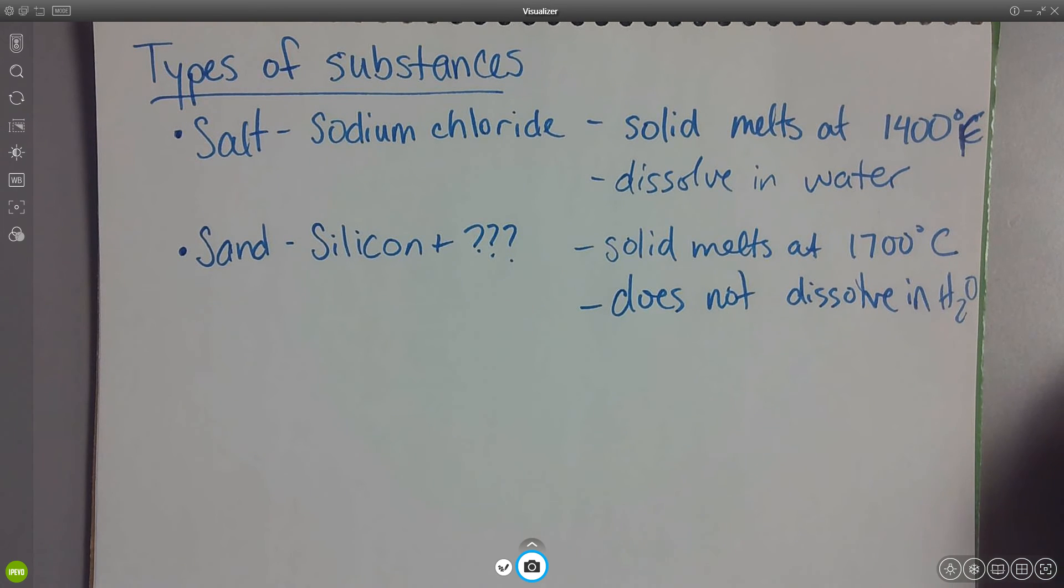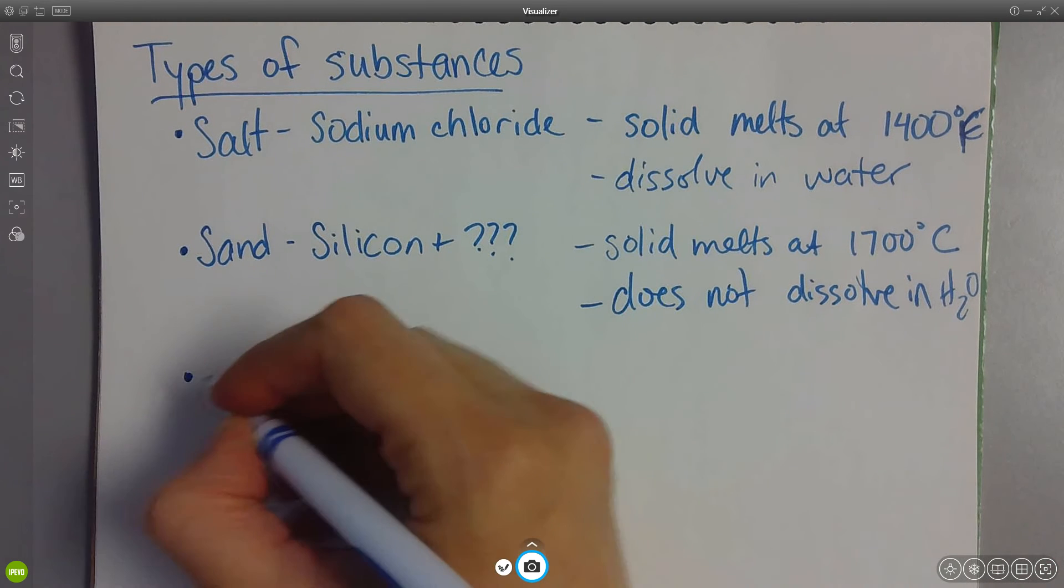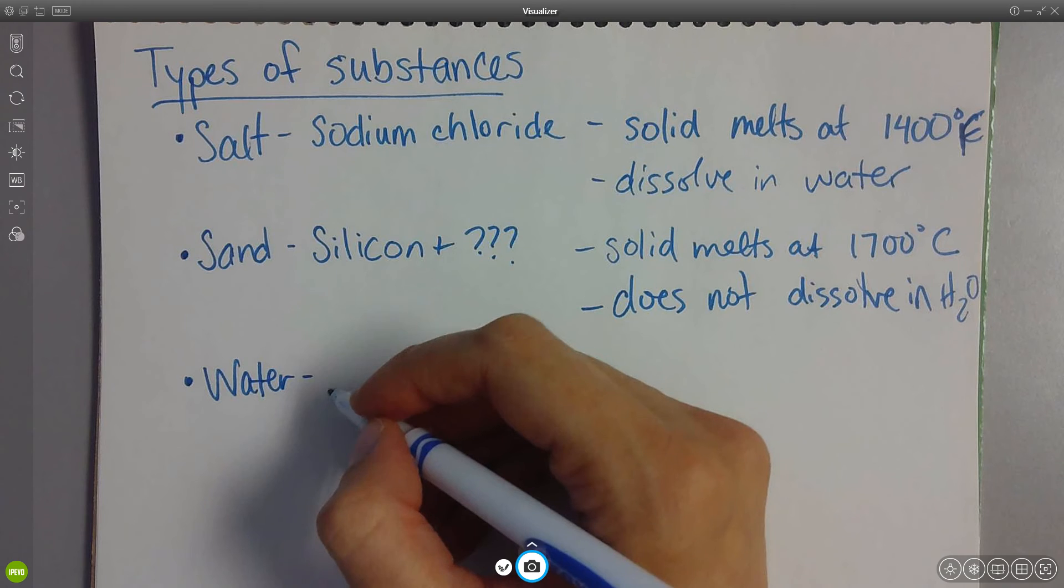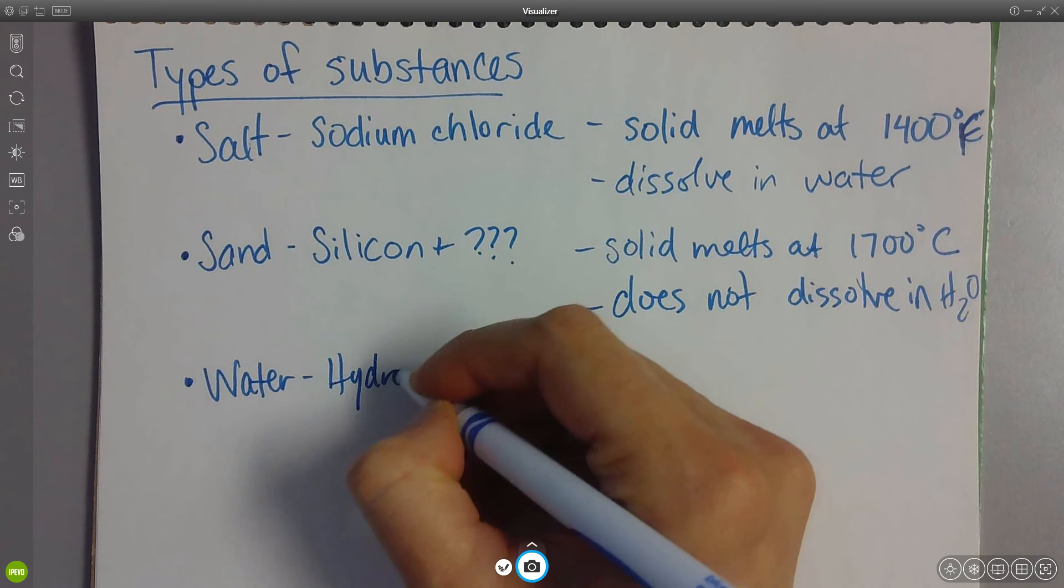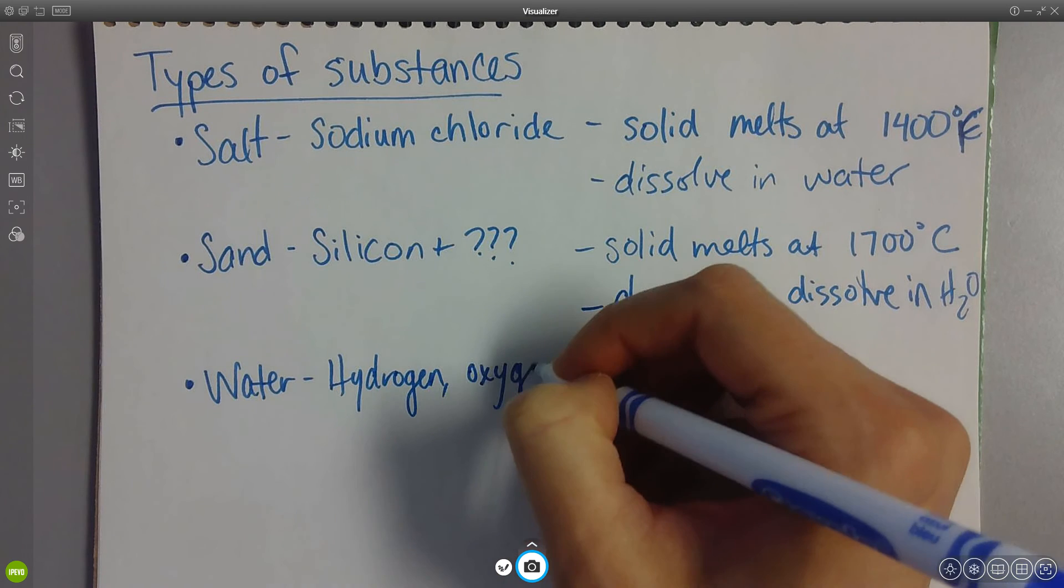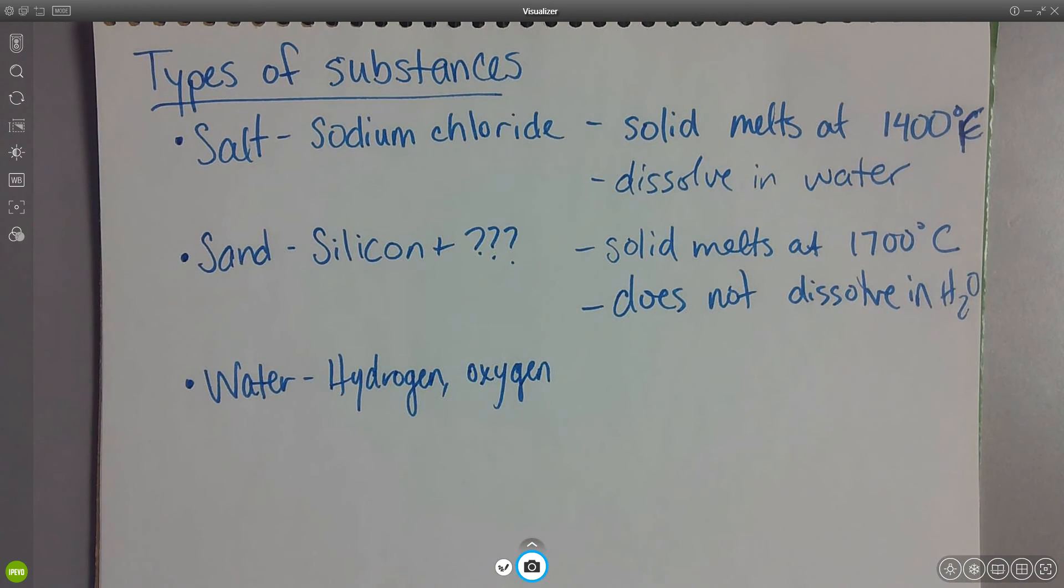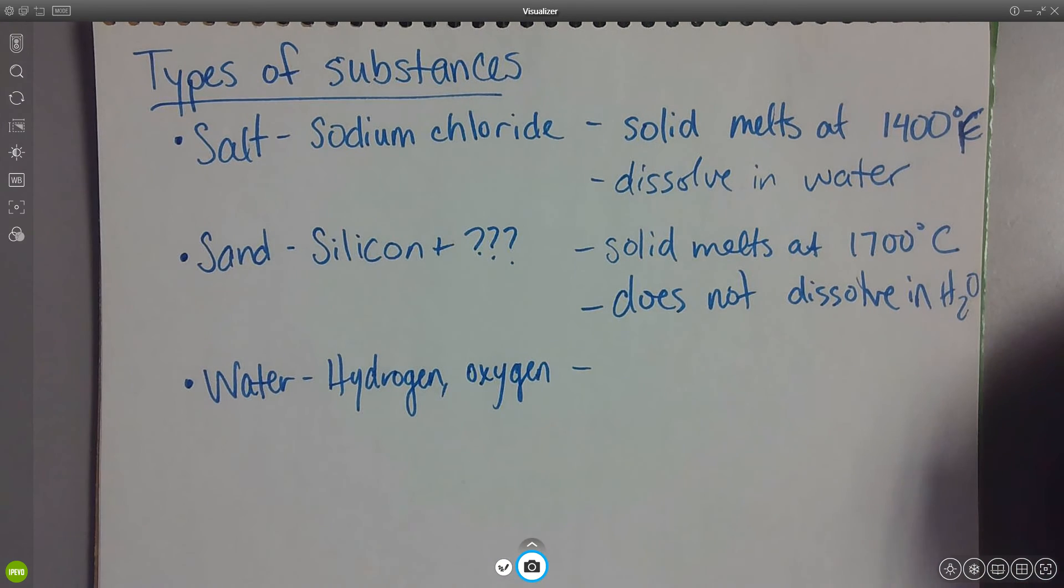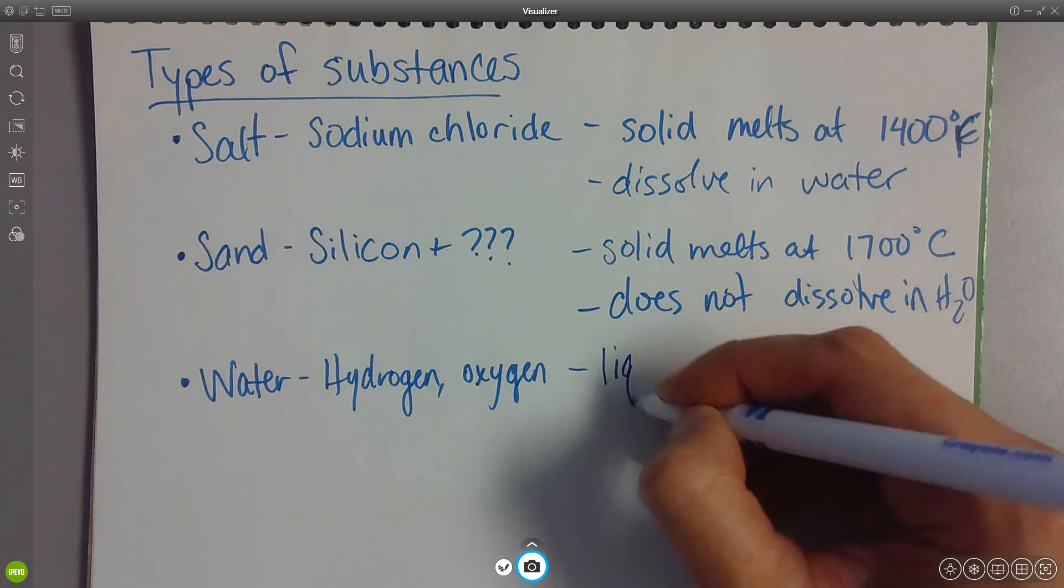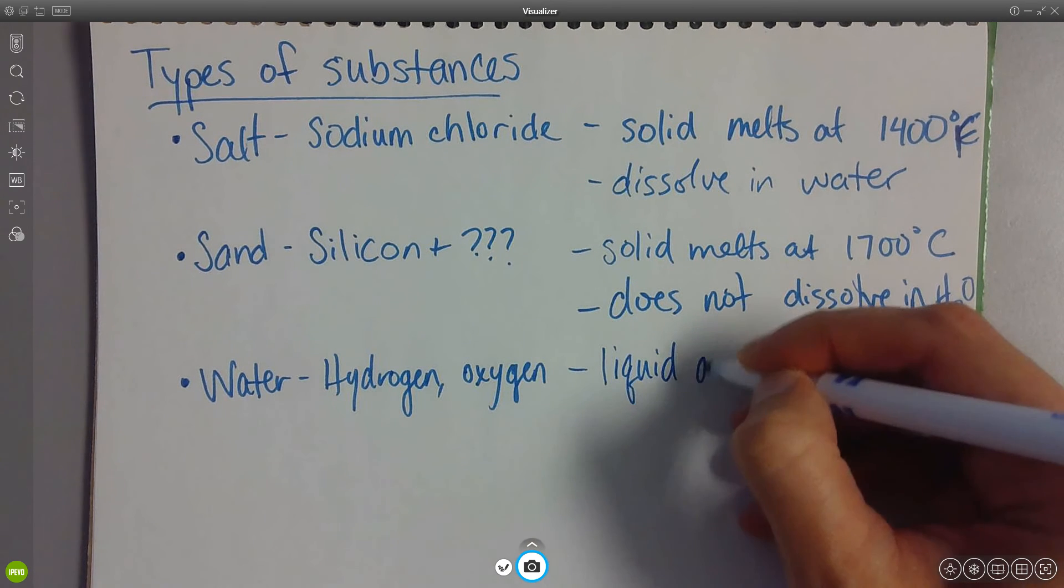All right. Now, what other substances did we encounter in this lab? Water. Super important, right? H2O. What does H2O mean? Hydrogen, oxygen. What are the properties of water for this lab? Just shout it out. What is it? I got this. Oh, yeah, sorry. Liquid. Liquid at room temperature.